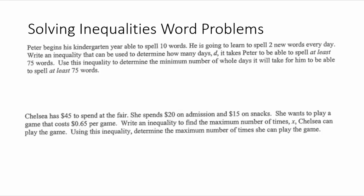I talked in a previous video about how to solve inequalities, but now we're going to talk about how to solve inequality word problems. Let's start with this first one: Peter begins his kindergarten year able to spell 10 words. He is going to learn to spell two new words every day. Write an inequality that can be used to determine how many days D it takes Peter to be able to spell at least 75 words, and use this inequality to determine the minimum number of whole days it will take him.